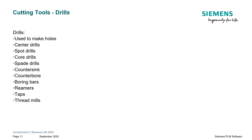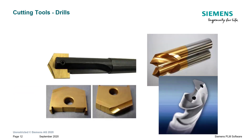Drills are used to make holes and come in all kinds of varieties: center drills, spot drills, core drills, spade drills, countersinks, counterbores, boring bars, reamers, taps, and thread mills. On the left, we have a spade drill with a replaceable bit. On the upper right, we have a spot drill, typically used to create a starter hole so the tool doesn't wander off. In the lower right, we have a twist drill with coolant holes through it to help keep the tool at a lower operating temperature and flush the chips out of the hole as you're drilling.